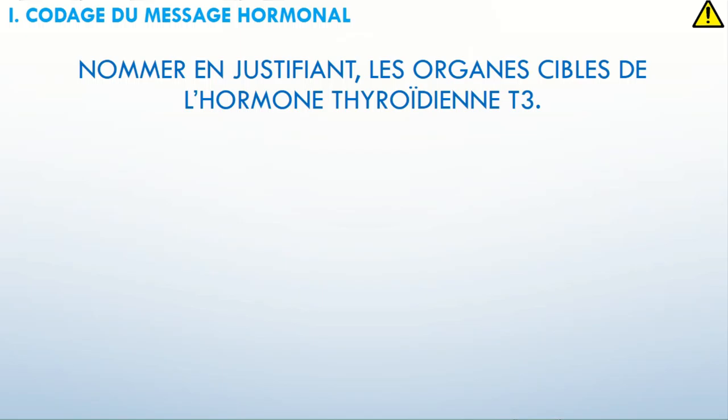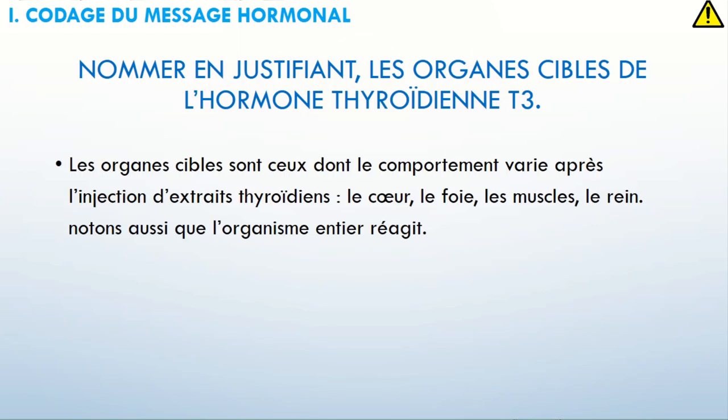La question suivante : nommer en justifiant les organes cibles de l'hormone thyroïdienne T3. L'organe cible, c'est celui qui va changer de comportement suite à la fixation de la T3. Comment je sais qu'il a changé de comportement, qu'il a réagi à cette hormone ? En mesurant le taux de O2. S'il y a variation du taux de O2 consommé suite à l'injection de l'hormone, donc c'est un organe cible. Les organes cibles sont ceux dont la consommation de O2 varie suite à l'injection d'extraits thyroïdien, qui sont cœur, foie, muscle et rein.